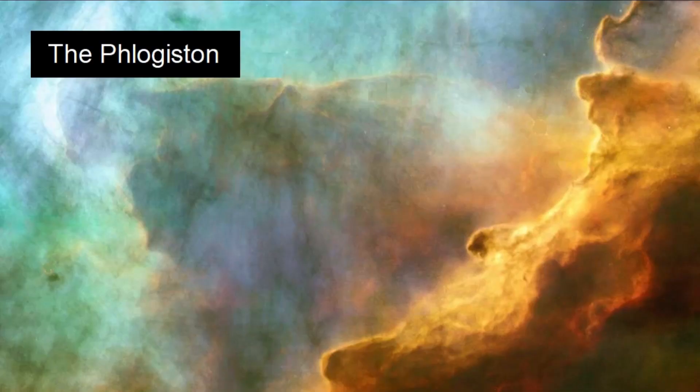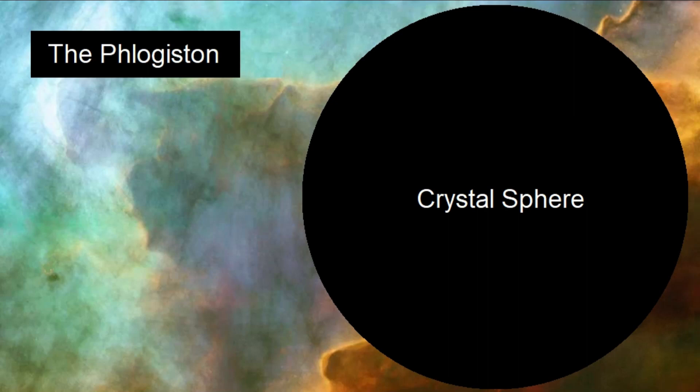The basic structure of arcane space is that there is phlogiston, and in the phlogiston there are crystal spheres. Inside the crystal spheres is wild space.